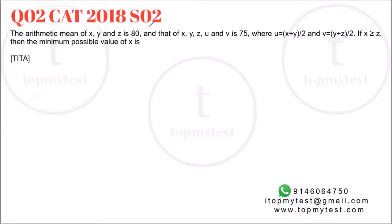The second one is from CAT 2018, slot 2. It says the arithmetic mean of x, y, z is 80 and that of x, y, z and v is 75. If u is given as this, v is given as this and x is greater than or equal to z. What is the minimum possible value of x? Okay, so x, y, z average is 80. So x plus y plus z should be equal to 240.